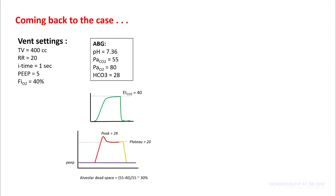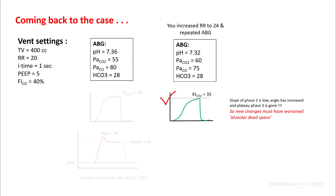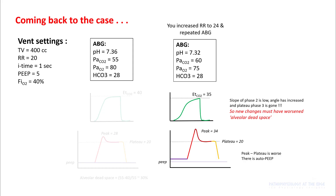Coming back to the case: when you get the ABG, look at your end-tidals. In this case, end-tidal CO2 was 40. You perform an inspiratory pause, look at peak minus plateau pressures — in this case it's 8 — and you calculate the alveolar dead space fraction, which is about 30%. This looked like a pretty good ABG. However, after changing the respiratory rate to 24 and repeating the ABG, you notice the end-tidal CO2 has fallen to 35, the slope of phase 2 is now lower, the angle has increased, and the plateau of phase 3 is gone. Your peak minus plateau pressures are now 14 instead of 8, so obstruction is worse, and you start noticing auto-PEEP.